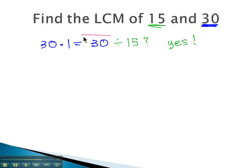Because we can, that tells us that that multiple, that 30, is the least common multiple or smallest multiple of both 15 and 30.